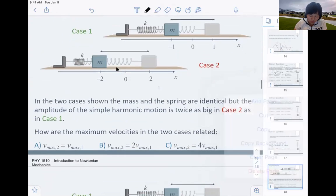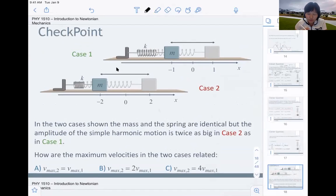Now, one more checkpoint question for today's class. This one you've already done. You're looking at two cases. The mass and the spring in these two cases are identical. But the difference is the amplitude of the simple harmonic motion is twice as big in case two. For case two, you drag it twice as far back and let go. For case one, you only drag half of what you have for case two. How are the maximum velocities in the two cases related?